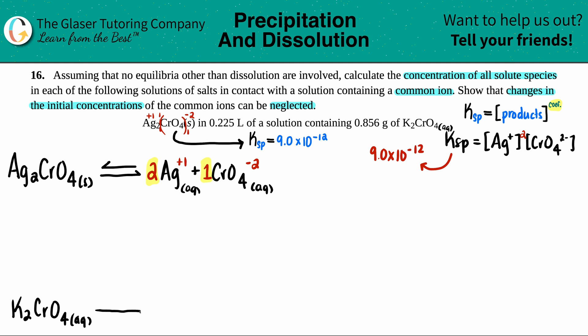K2CrO4 is aqueous and breaks down 100% into its two ions. The chromate has to stick together, so it's K and CrO4. The CrO4 has a negative two charge and potassium is group one with a plus one charge. I have two potassiums so I put a two in front, and one chromate. These brackets mean molarity, but they didn't give me molarity values.